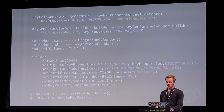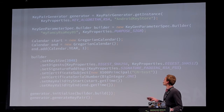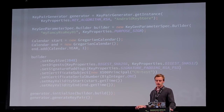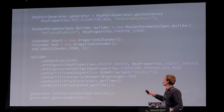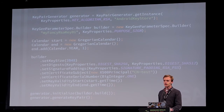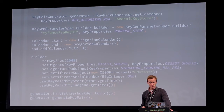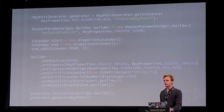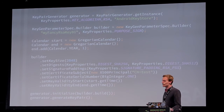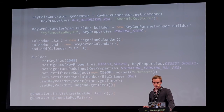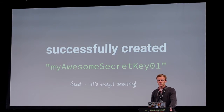The equivalent for an RSA key looks similar — use KeyProperties.KEY_ALGORITHM_RSA and KeyProperties.PURPOSE_SIGN. You also need a Calendar for start and end dates, because every key inside the KeyStore needs a valid certificate, which it creates by itself. You can later replace it with a signed certificate from a Certificate Authority.